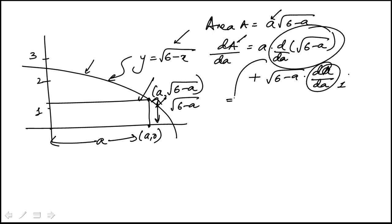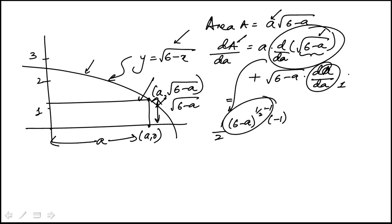To differentiate the square root of 6 minus A, I'll use the chain rule. That gives half times (6 minus A) to the power of half minus 1, and then the derivative of 6 minus A is minus 1. So that becomes minus 1 over 2 square root of 6 minus A. We also have that A here, so this entire term becomes minus A over 2 times square root of 6 minus A, plus square root of 6 minus A.